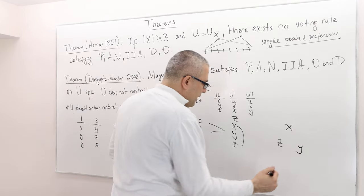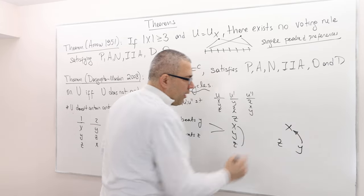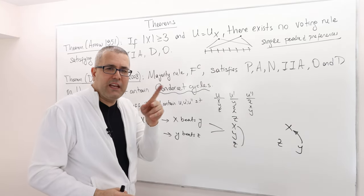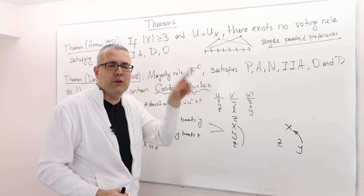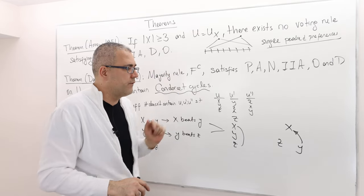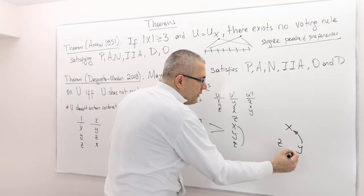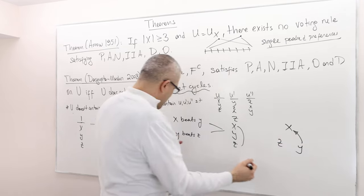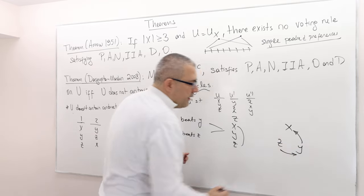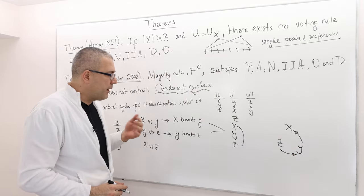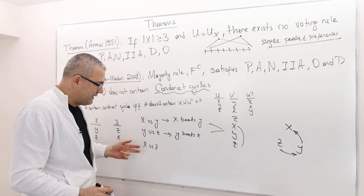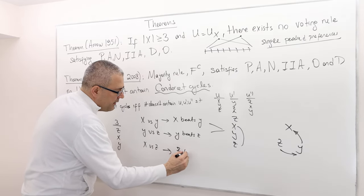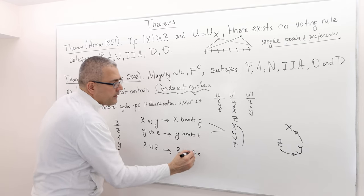That's exactly what I mean by cycle. If I have x, y, z, so x is better than y. When we are given x versus y, majority is going to vote for x. When it becomes z and y, y is going to be the majority's choice. But when it's given x and z, z beats x.